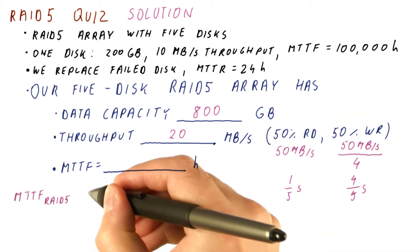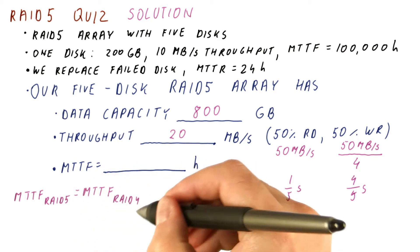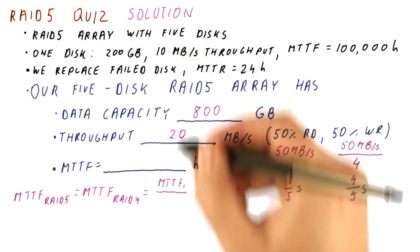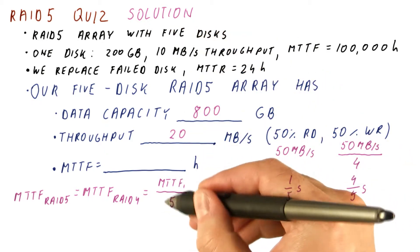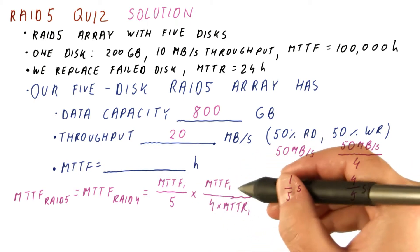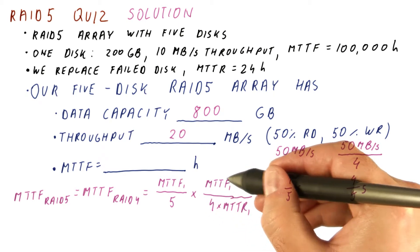Finally, our MTTF here for RAID 5 is exactly the same as it was for RAID 4. It is the MTTF of one disk divided by five. This is how long we have until one of the disks fails, times how many times we can attempt a repair until we finally experience a failure of one of the remaining four disks in this array.